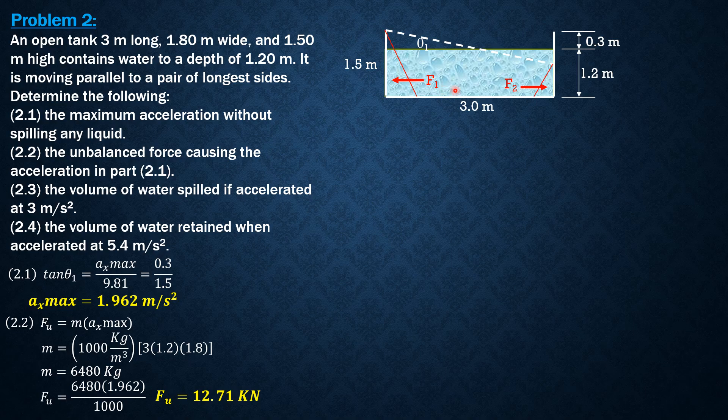1.8 times 1.5 for F1, that's the contact area. For F2, the contact area is 1.8 by 0.9 because this is 0.9 meter.